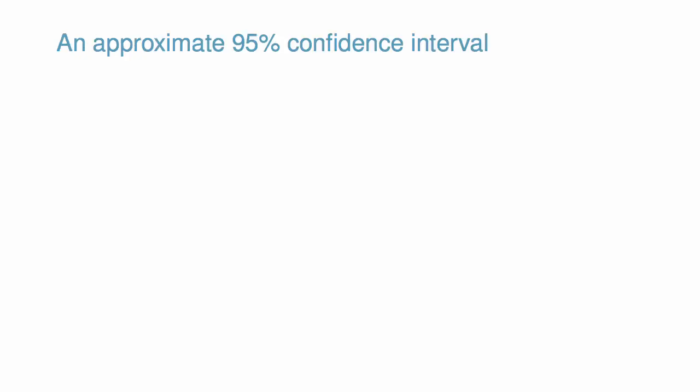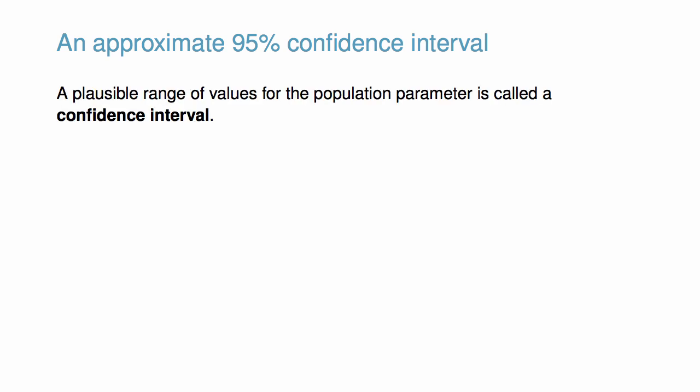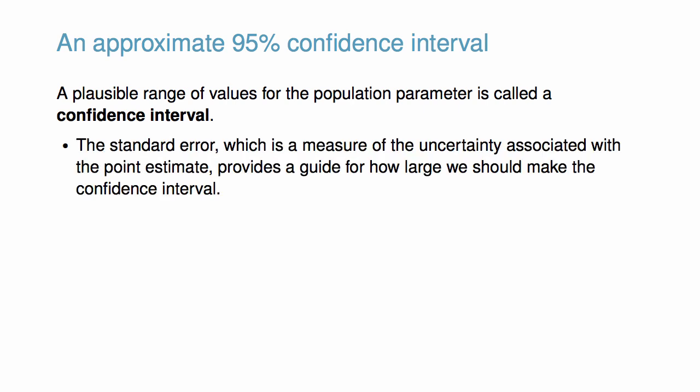A single point estimate, like the sample mean, will likely not be equal to the exact population parameter, like the true population mean. On the other hand, if we report a range of plausible values, we have a good shot at capturing the population parameter. A plausible range of values for the population parameter is called a confidence interval. The standard error is a measure of uncertainty associated with a point estimate and provides a guide for how large we should make the confidence interval.